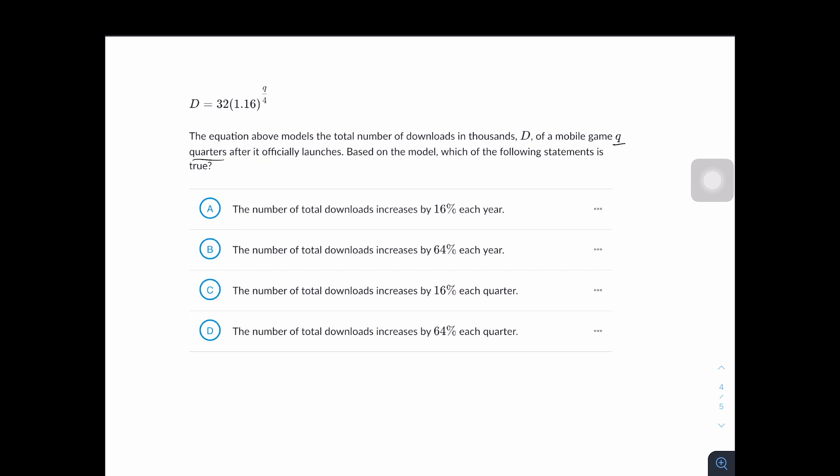It says the number of total downloads increases by 16% each year. Now you may think this is incorrect because of Q over 4, but it's actually the right answer because there's four quarters in a year, right? And so if we plug in 4 for Q, this right here becomes 1. So 1.16 raised to the power of 1 is 1.16. And when we multiply 32 and 1.16, 32 gets raised by 16%, which is true. Which means answer choice A is true. But let's take a look at the other answer choices and see why they're wrong.